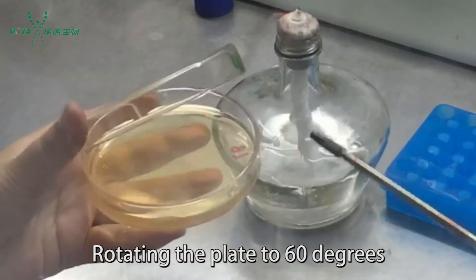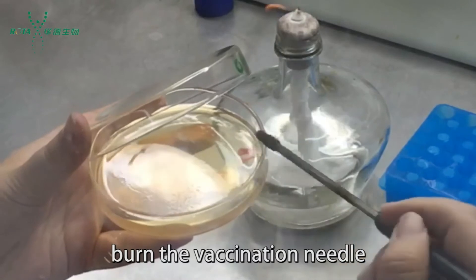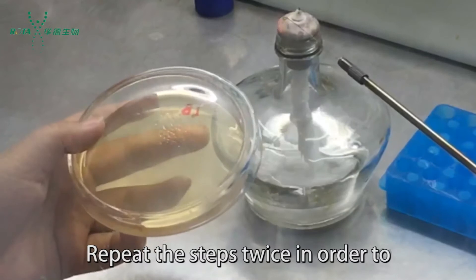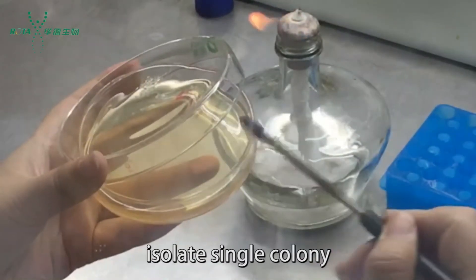Rotate the plate to 60 degrees and burn the inoculation needle. After cooling, cross on the plate again. Repeat these steps twice to isolate a single colony.